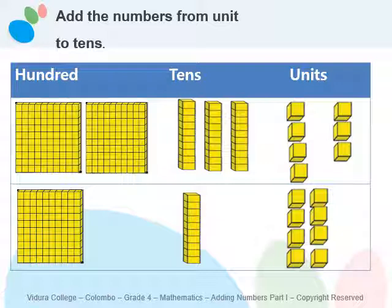This is the first step of adding numbers. Look at these number blocks — these blocks will help you to add the given numbers. First, we will name the digits according to their place value. In the first line, you can see hundreds, tens, and units. Let's count the blocks starting from units. There are seven units, three tens, and two hundreds. So we can read the number two hundred and thirty-seven.